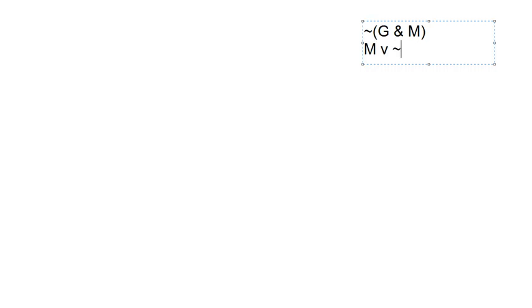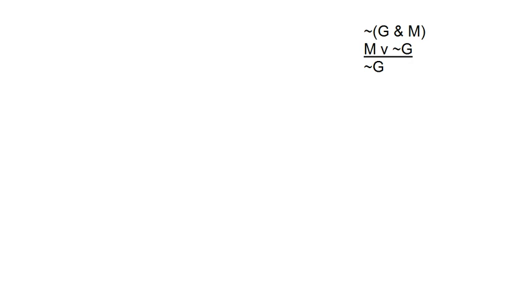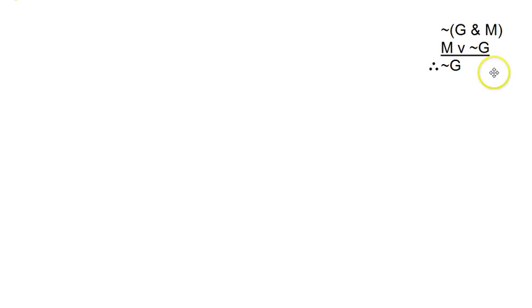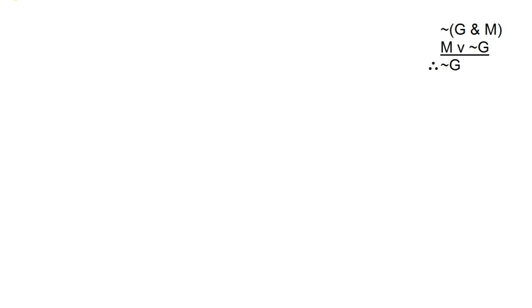So we've got NOT G and M, then we've got M or NOT G. We'll underline it to mark the conclusion and put our therefore symbol in there. This might be like something you'd see on the exam or on the homework.